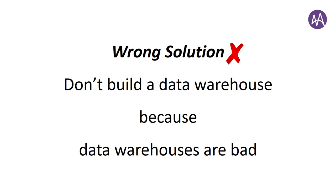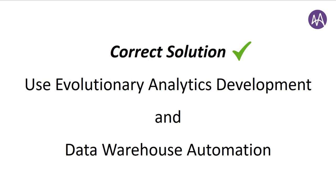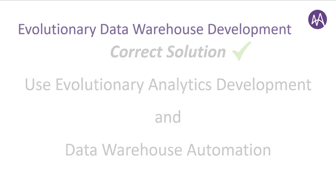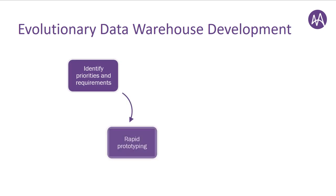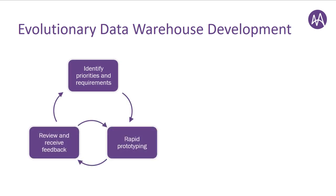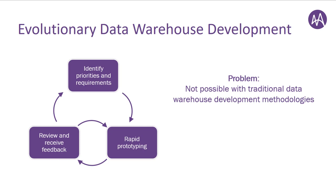So let's now look at an alternative solution — a combination of using an evolutionary analytics development methodology with data warehouse automation. Evolutionary development is a constant cycle of requirements gathering, rapid prototyping, and review, and it aims to deliver functionality incrementally in short release cycles. The evolutionary approach allows development of analytic systems that deliver value in a shorter timeframe and have a tighter fit with organizational decision making requirements. The problem is that the evolutionary approach is extremely difficult with traditional data warehouse development methods, because manual coding just takes too long. So we need to use data warehouse automation to solve these problems.